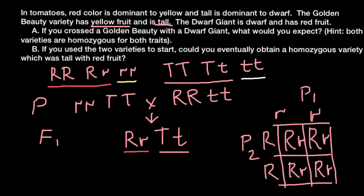Now we are ready to work on Question B: if you used the two varieties to start, could you eventually obtain a homozygous variety which is tall with red fruit? Basically, we want to know if we can get a plant that is homozygous dominant — RRTT — which is important in order to get true breeding plants, because the F1 heterozygotes are not true breeding.